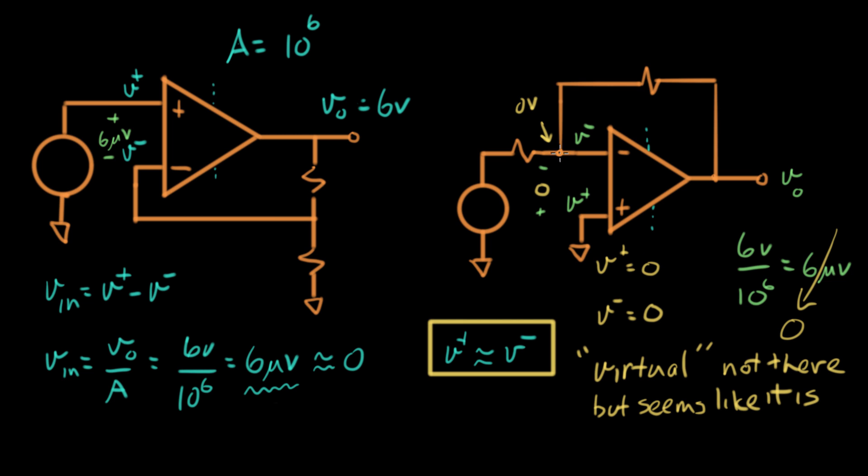So in this case, this node is not connected to ground, but it seems like it is. So this is referred to as a virtual ground.